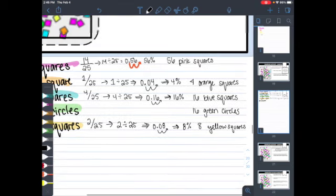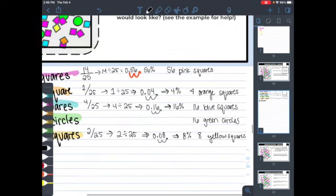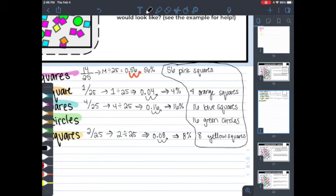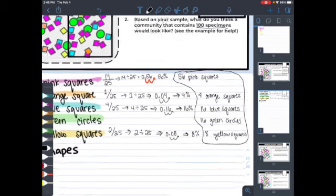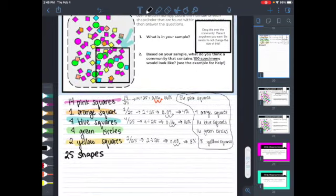So when we look at these numbers, this is what our answer would be. We would have 56 pink squares, 4 orange, 16 green, and 8 yellow squares. When I look at this, there's something that immediately stands out to me as that is an overestimate.